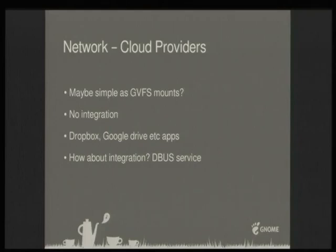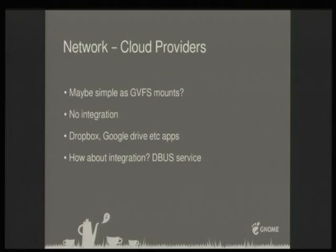A better solution for cloud providers would be a DBus service. DBus is an IPC system — a way to communicate between different processes. We could let Dropbox, for example, connect to the file manager via a basic API and report which files are synchronizing. We're working on it for the future. I think it will be a nice advantage over Windows, macOS, and others because they don't do it either.